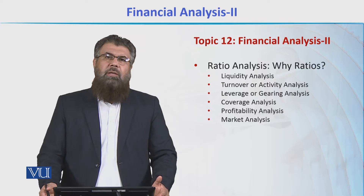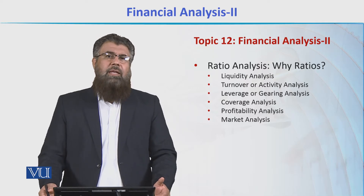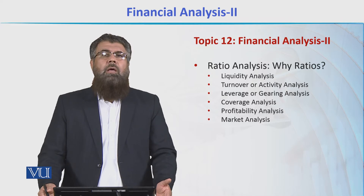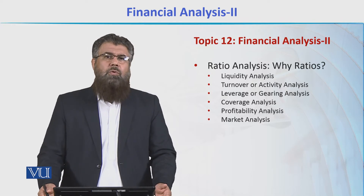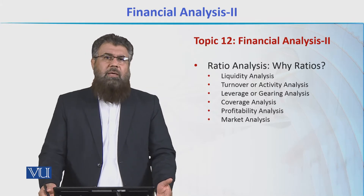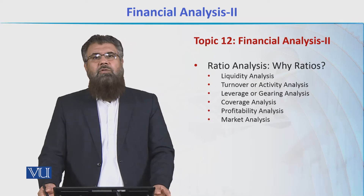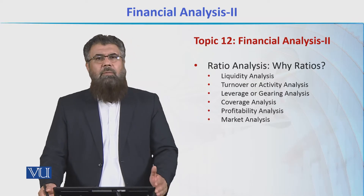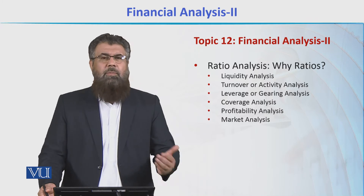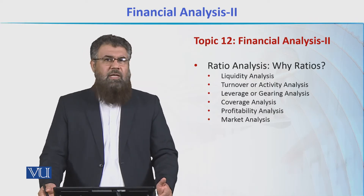We also have ratios which are part of turnover or activity analysis — how much activity is happening in our business, including making sales, generating receivables, collecting money, buying and selling assets. The higher the rate of activity or turnover, the more profit. For example, if I buy a product for 100 rupees and sell it for 120, doing it once gives 20 rupees profit; doing it twice gives 40; three times gives 60. Key ratios here include receivables turnover, payables turnover, and asset turnover.